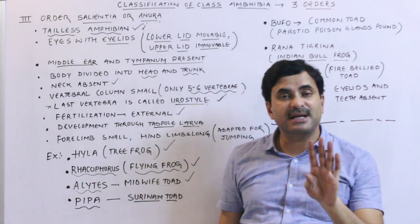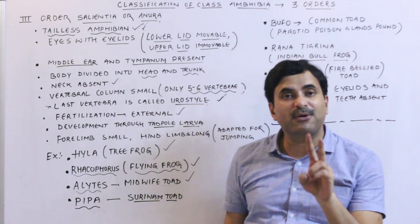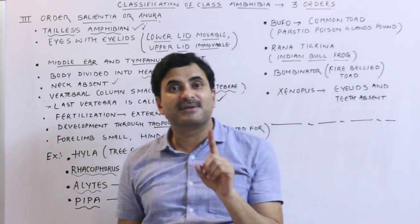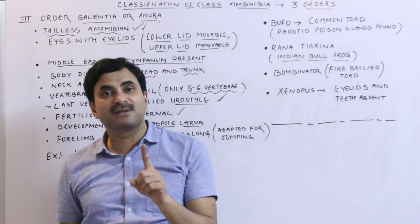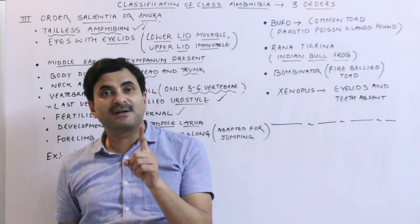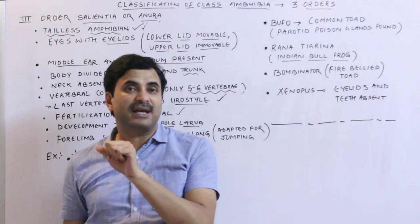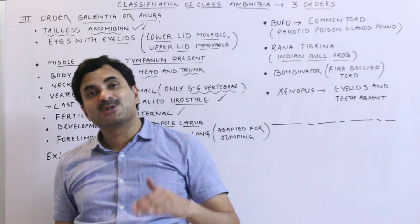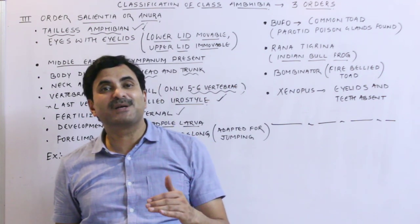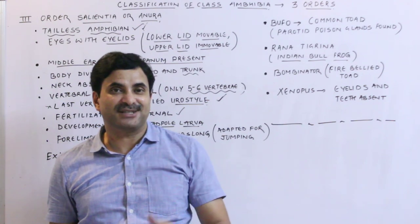So we have completed the classification of Class Amphibia today. It is classified into three orders: first, Apoda — without limbs; second, Urodela — tail persistent throughout life; and third, Anura — the tailless amphibians. Thanks a lot for watching, and we will be coming soon with many more videos.